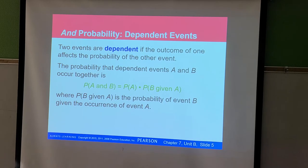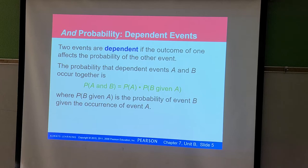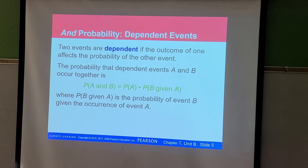If you have two dependent events, you first find the probability of A, then you still use multiplication, but the second probability changes. You use the probability of B given A — meaning the probability of B given that A actually occurred.